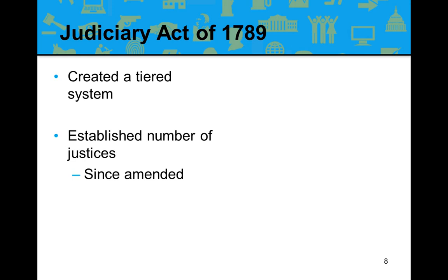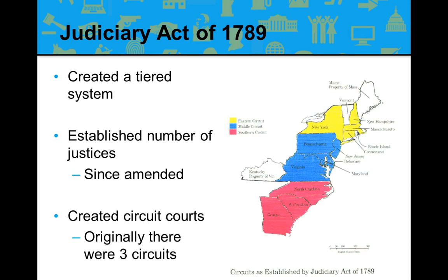The Judiciary Act also created circuit or appellate courts — district and trial courts mean the same thing, as do circuit and appellate. The act created three circuit courts: the Eastern Circuit in yellow, the Middle Circuit in blue, and the Southern Circuit in red, as shown on the map of circuits created by the Judiciary Act of 1789.